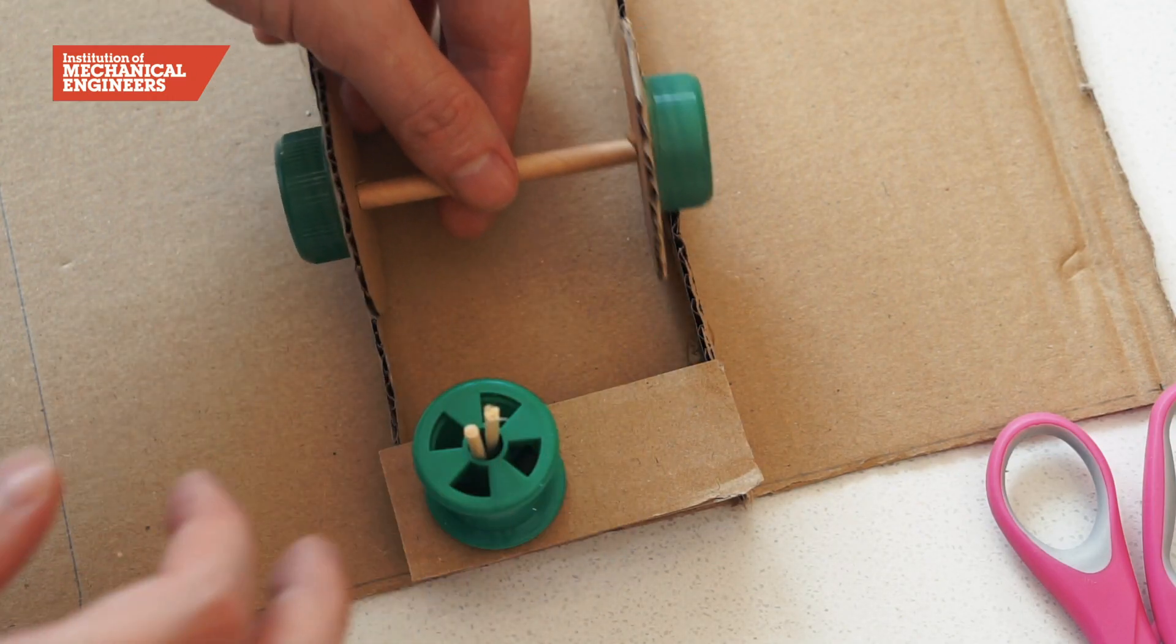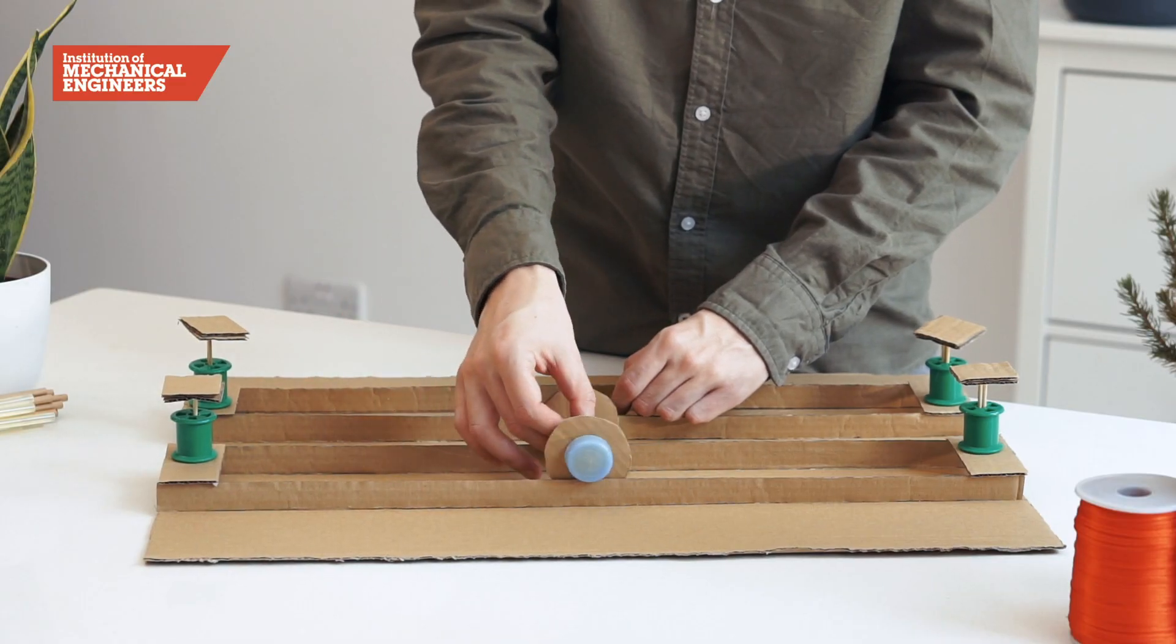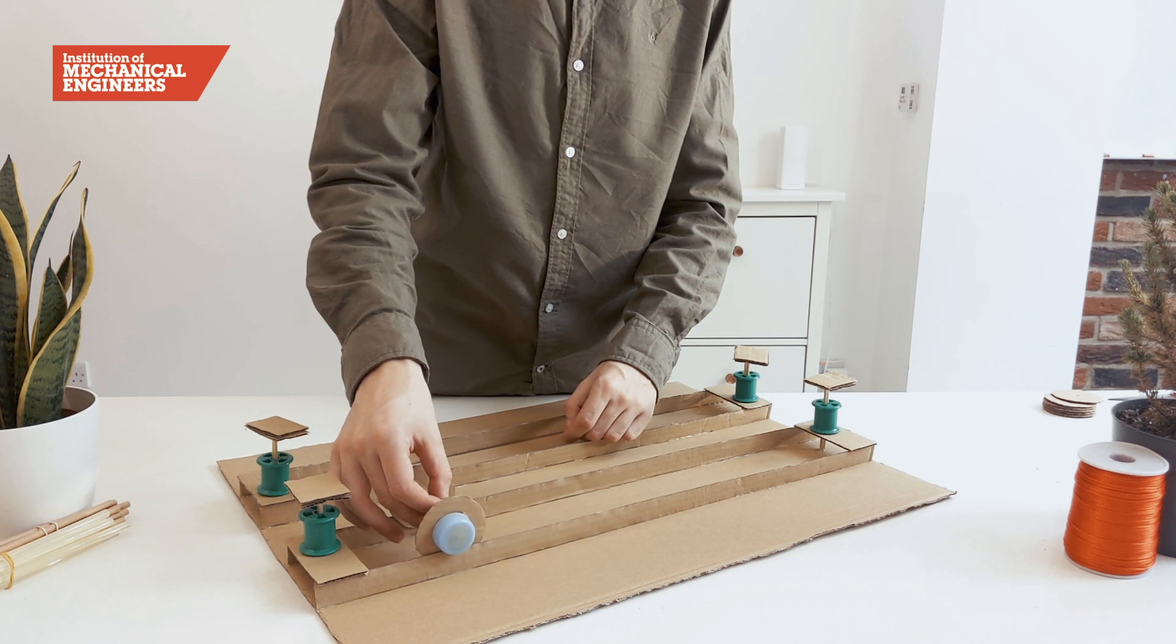We can check the length of the axle by positioning the card discs inside the track. The wheels should rotate freely all the way along the length.